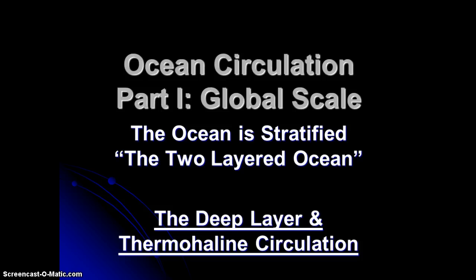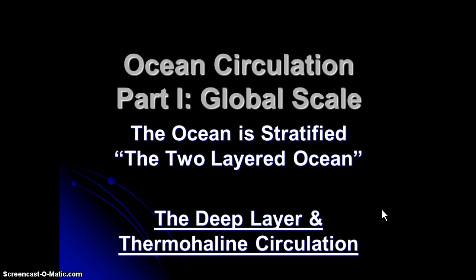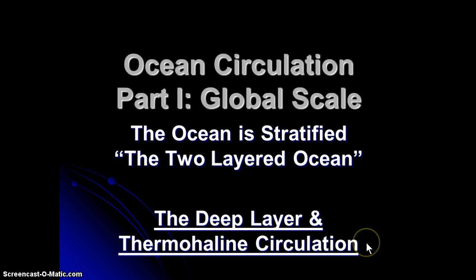Greetings class, welcome to our next lesson in ocean circulation. We're still focusing on the stratification of the ocean and how it's separated into two layers. In the previous lesson we went over the characteristics of the physical phenomena that go into formation of the surface ocean. In this mini lesson we'll cover the formation of the deep layer, and then how the surface ocean and the deep layer circulate to cause the global circulation pattern — the largest scale circulation pattern of the ocean — and we call that thermohaline circulation.